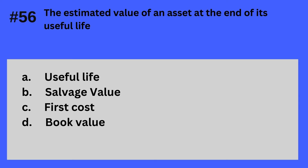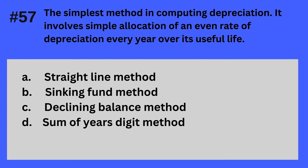Question 56. The estimated value of an asset at the end of its useful life. A. Useful life, B. Salvage value, C. First cost, D. Book value. The answer is B — Salvage value.